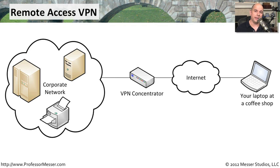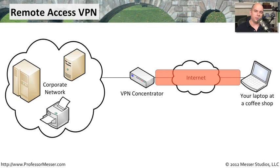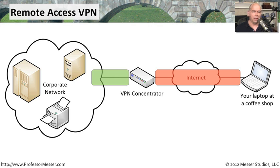We would use a VPN or remote access connection to be able to do that, so we would set up through the software in our laptop or mobile device a way to encrypt and create a tunnel to send encrypted data all the way to something like a VPN concentrator that would then pull it off the tunnel, decrypt the information, and pass it through internally in the clear so that all of our devices can communicate back. And of course, the process does the same thing in the other direction.